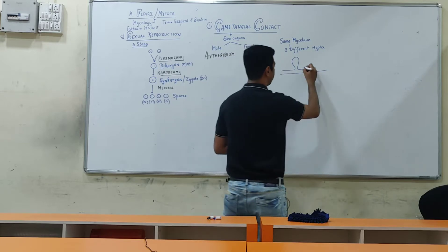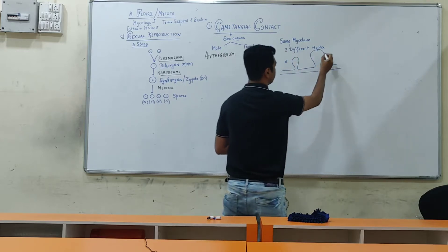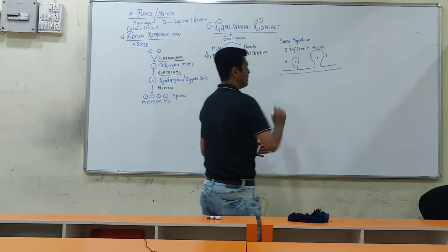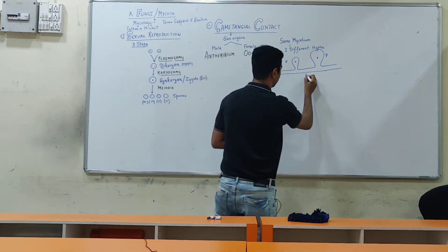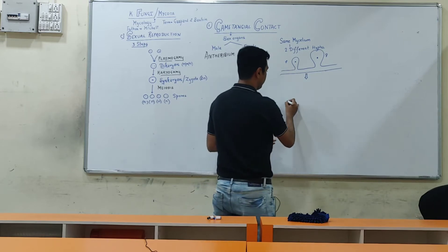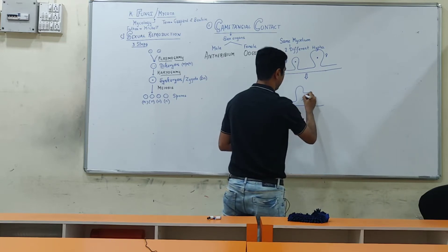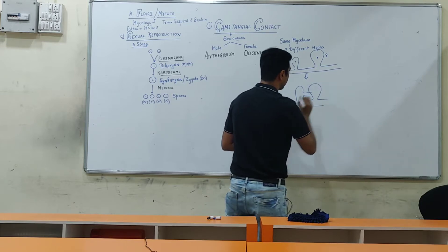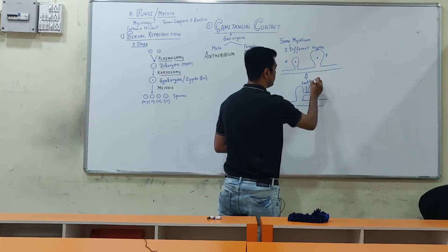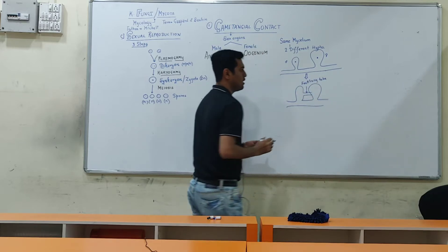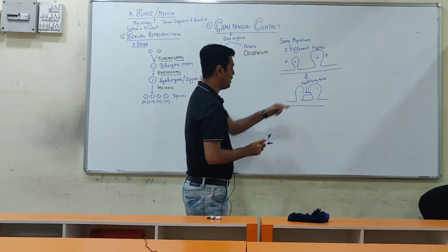One hypha will develop into the antheridium — the male gametangia — and the other hypha will develop into the oogonium. So this is the same mycelium from which both have developed: the male antheridium and the female oogonium. Each of them has a single nucleus present.